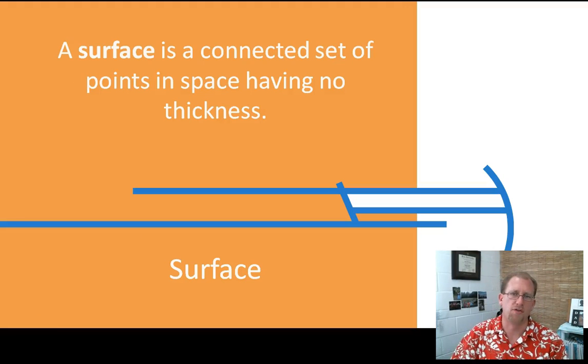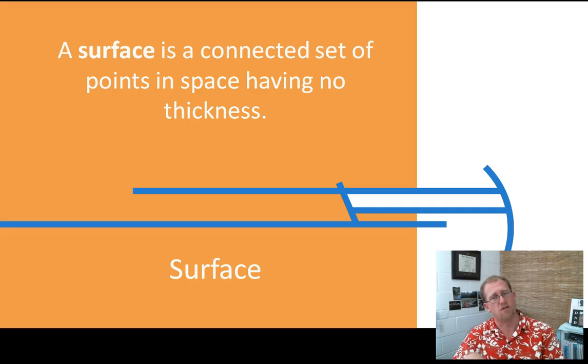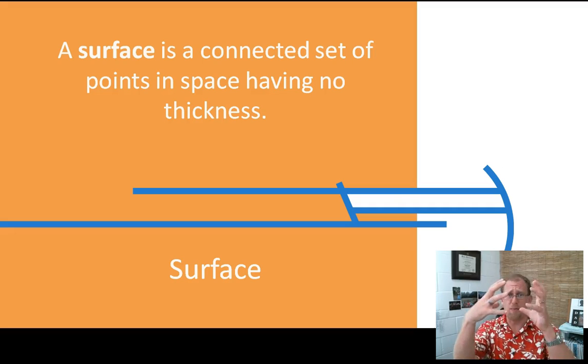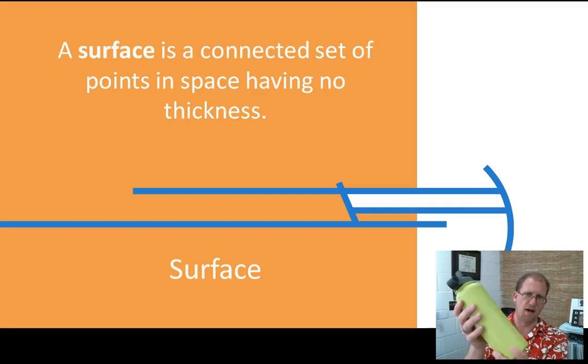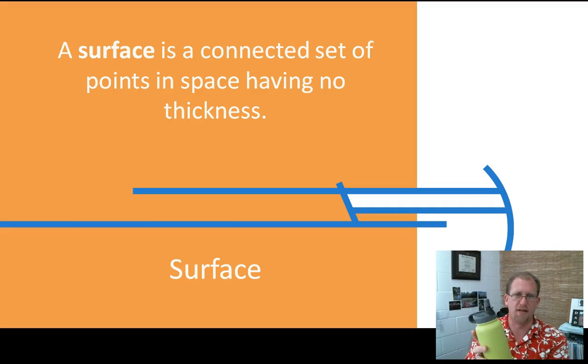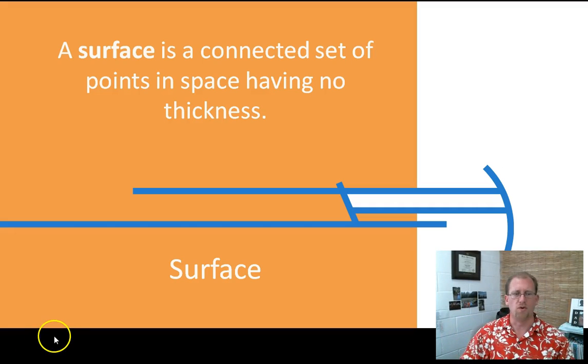We began 1.6 talking about curves, which were a set of points that weren't necessarily in a straight line. We're beginning our conversation in this lesson by talking about the same idea, but now making it three-dimensional. Instead of a curve being a flat thing that is kind of swooshy, surfaces now are three-dimensional. They come off the page, they float in space in front of you. A surface is an object that has no depth, has no thickness, but is a set of connected points in space.